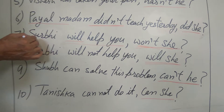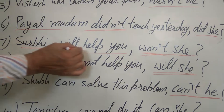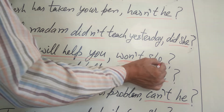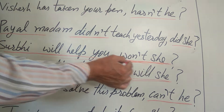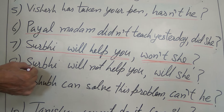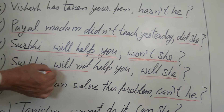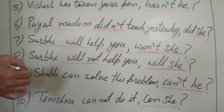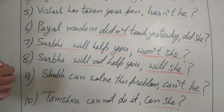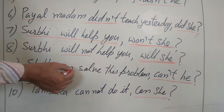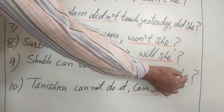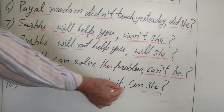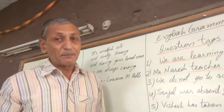See? With a positive statement, you include negation in the tag, and with a negative statement, the negation is not there. This is what you must always remember. 'Shubh can solve this problem' — 'Can't he?' 'Tanishka cannot do it' — 'Can she?' These were some of the examples.